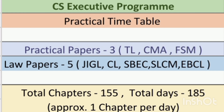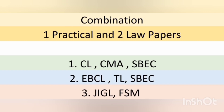I have divided the eight subjects into three parts. The first combination includes Company Law, which is a purely law-based paper and a very important one for CS. The second is CMA, which is a practical paper, and the third is SBC, also a law paper. I didn't make the combination based on the subject order — I made it on the basis of the contents. I placed Company Law in combination one because we need to know some provisions in Company Law to study concepts in other subjects.